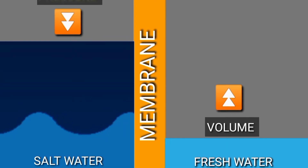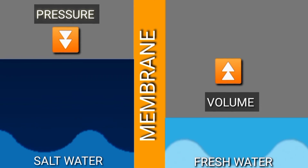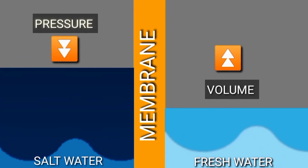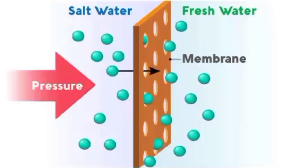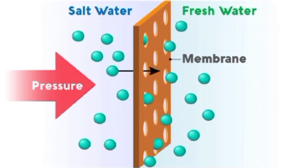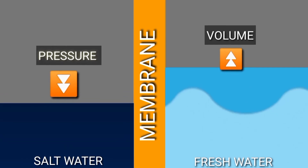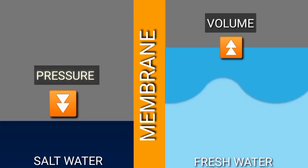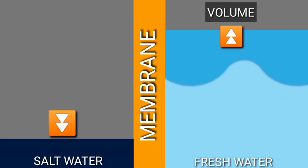Reverse osmosis removes contaminants from unfiltered water, or feed water, when pressure forces it through a semi-permeable membrane. Water flows from the more concentrated side — more contaminants — of the membrane to the less concentrated side — fewer contaminants — to provide clean drinking water.